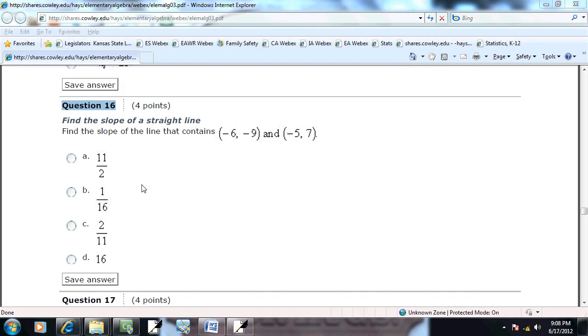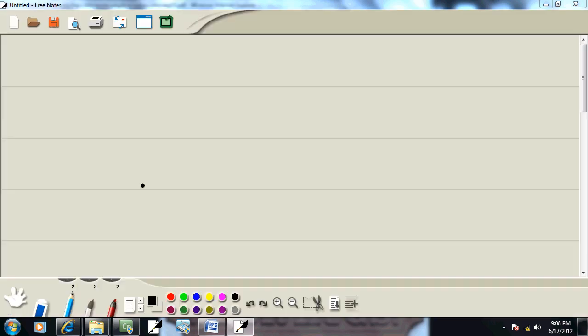Let's take a look at problem number 16. It says find the slope of the line that contains two points. Well, let's first look at our formula for that.